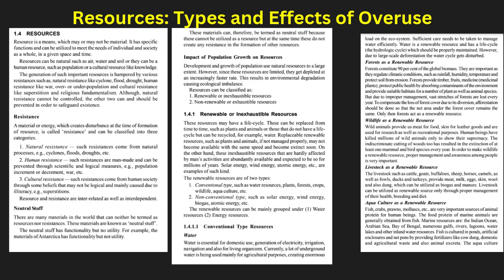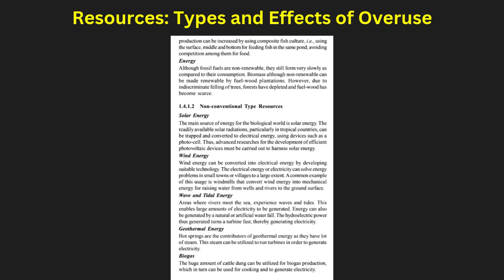Resources: types and effects of overuse. Resources are classified into renewable — such as solar, wind, and water — and non-renewable — such as coal, oil, and minerals — and environmental degradation. Overuse of fossil fuels results in air pollution and climate change. Deforestation disrupts ecosystems, affecting biodiversity and carbon cycles. Water overconsumption causes scarcity, affecting agriculture and human settlements.